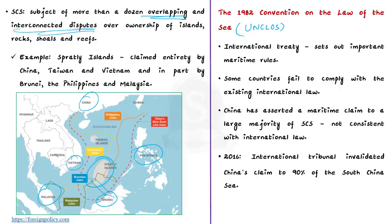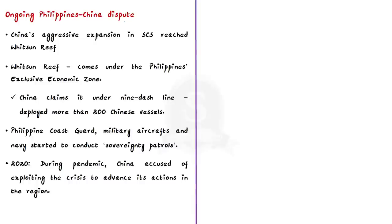China has asserted a maritime claim to a large majority of the South China Sea, inconsistent with international law. In 2016, an international tribunal invalidated China's claim to 90 percent of the South China Sea, saying it is inconsistent with UNCLOS. But China did not recognize this verdict and continued to build artificial islands in disputed waters, equipping them with radars and missile batteries.